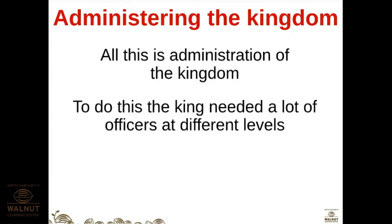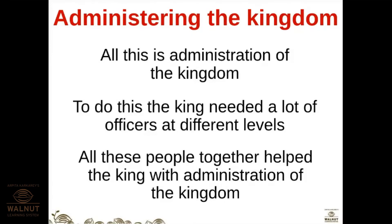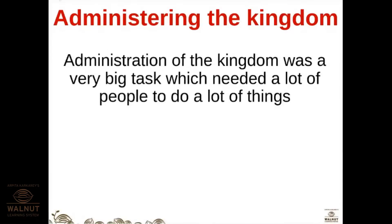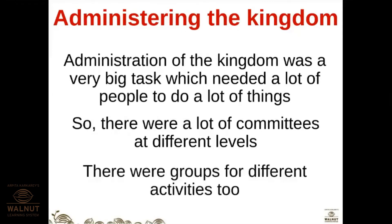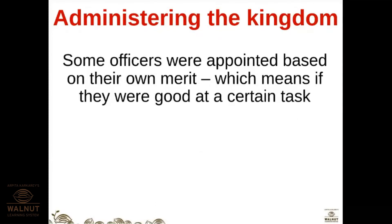The king had to provide services to the people like roads, tanks, schools, temples, hospitals, and so on. All of this is administration of the kingdom. To do this the king needed a lot of officers at different levels. Administration of the kingdom was a very big task which needed a lot of people to do many things. There were committees at different levels and groups for different activities.